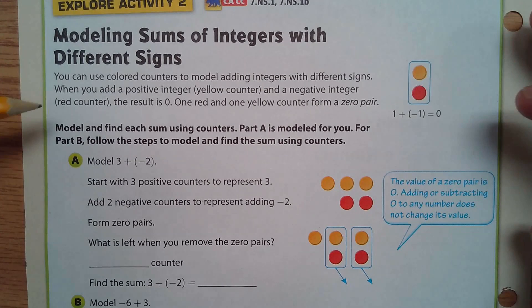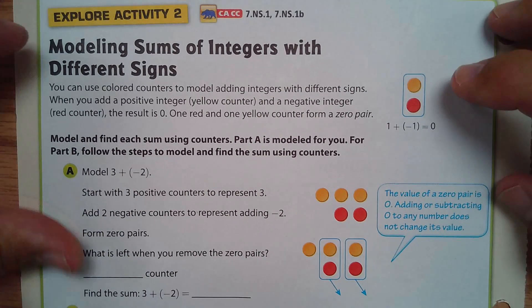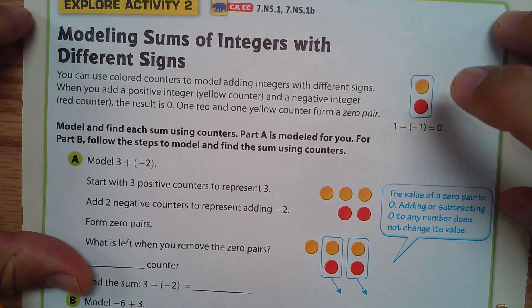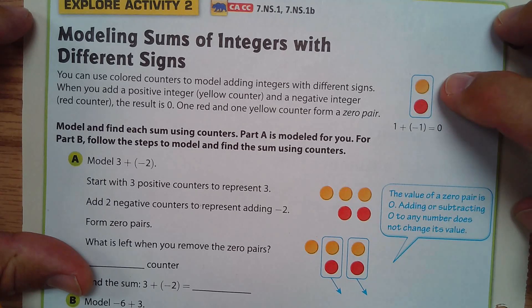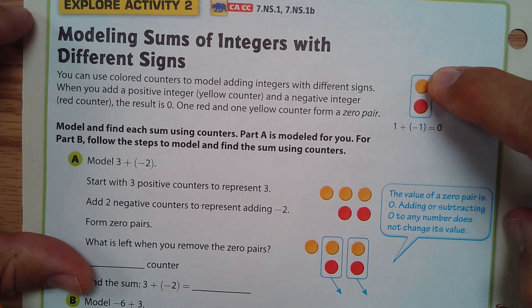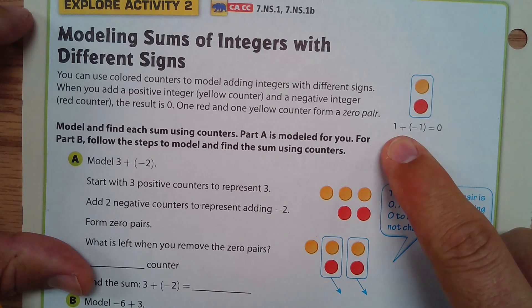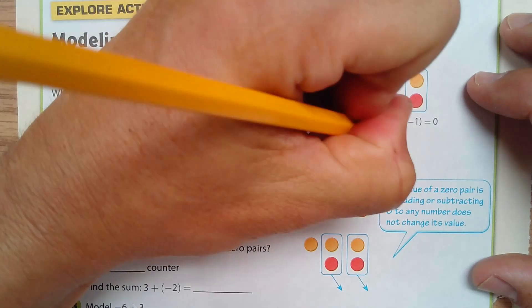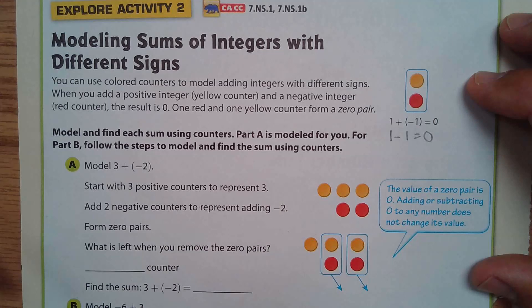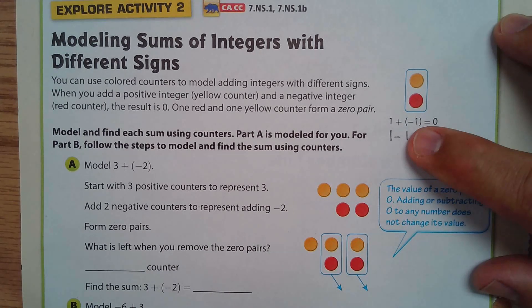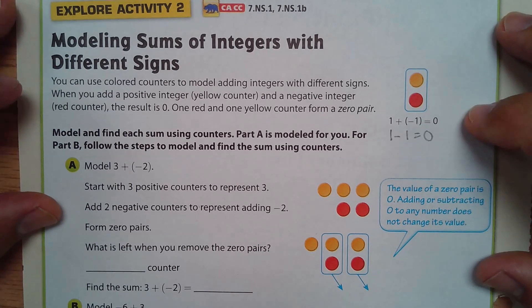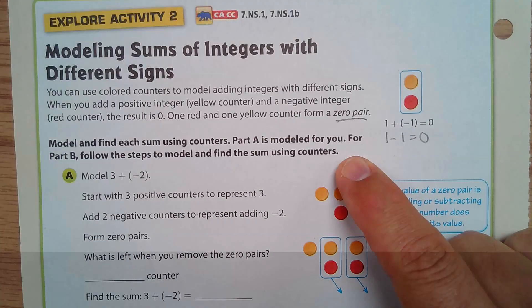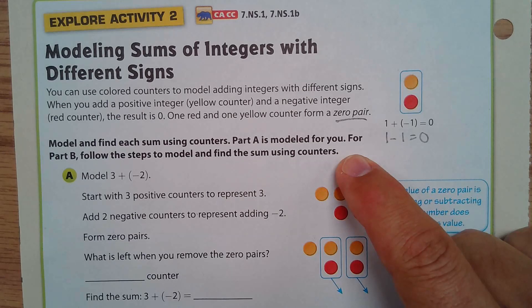On the back side, we're working with different signs using counters. Orange is positive and red is negative. One positive counter plus one negative counter adds up to zero — just like one plus negative one, which is the same as one minus one, equals zero. This is called a zero pair.